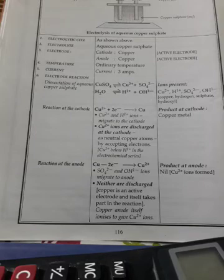Now we will see reaction at anode. At anode, both sulphate ion and hydroxyl ion will migrate towards anode. But neither will discharge. Why? Because copper is an active electrode. It has more tendency to lose electron as compared to sulphate or hydroxyl. So it itself takes part in the reaction.